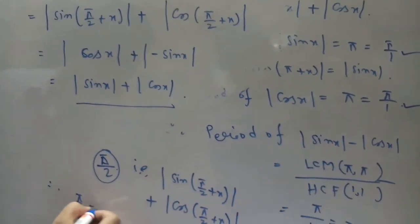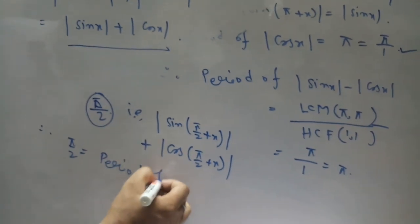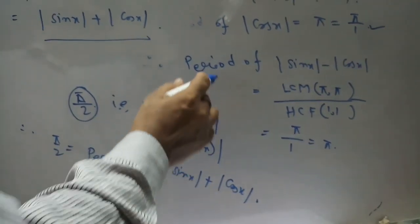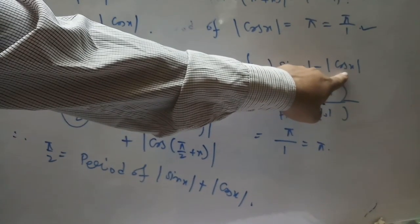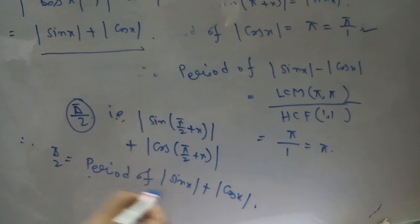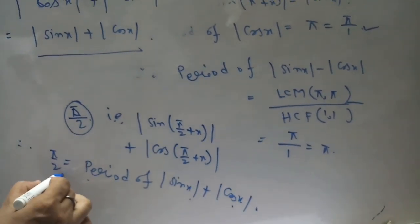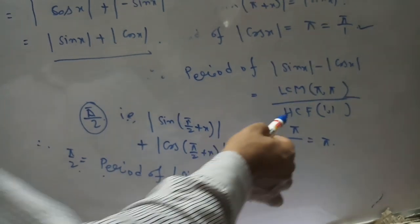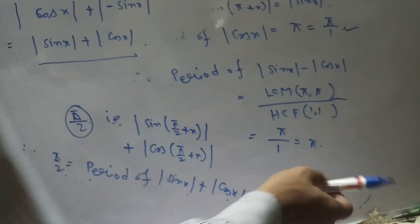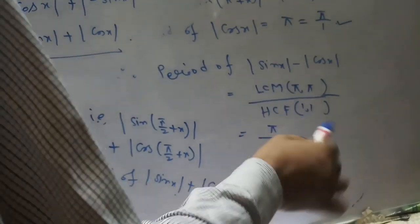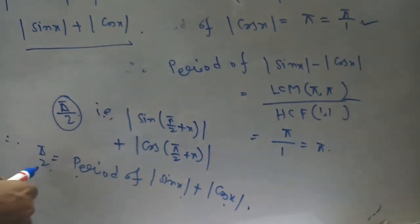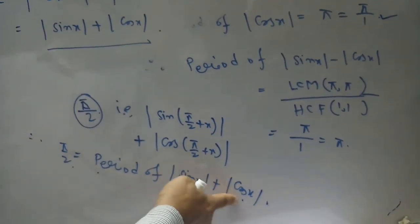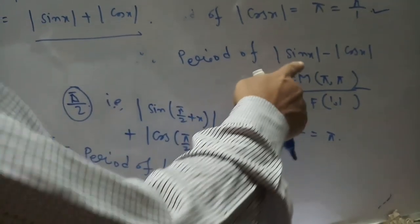Therefore, π/2 is the period of |sin x| + |cos x|. But the period of |sin x| − |cos x| is π. The period of |sin x| + |cos x| is π/2. According to the LCM theory, the period would be π, but here there exists a minimum value of π/2 before reaching π. Therefore, π/2 is the period of |sin x| + |cos x|, and π is the period of |sin x| − |cos x|.